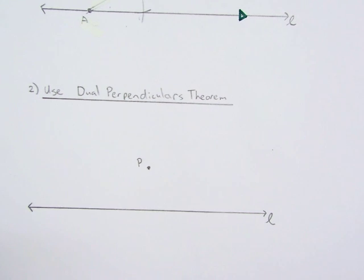The very first thing in the dual perpendiculars theorem construction is to construct a line perpendicular to L through P.